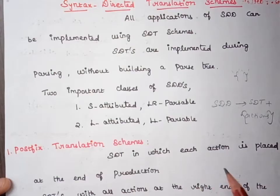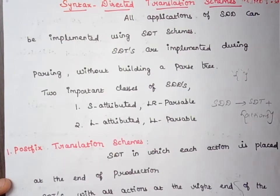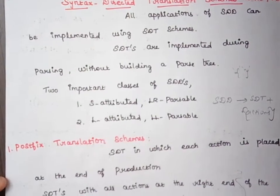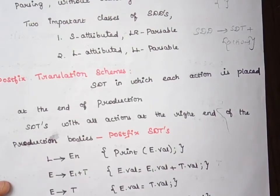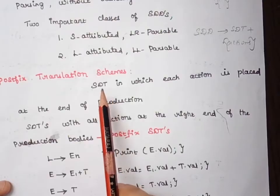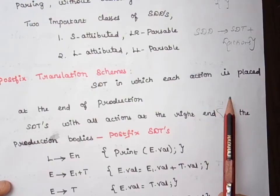As soon as all grammar symbols from left to right have been matched, the action in the production body will get executed. The SDT has several types: postfix translation scheme, parser stack implementation of postfix SDT, SDT with actions inside production, and eliminating left recursion from SDT. The first type is the postfix translation scheme, where we construct the SDT such that each action is placed at the end of the production.